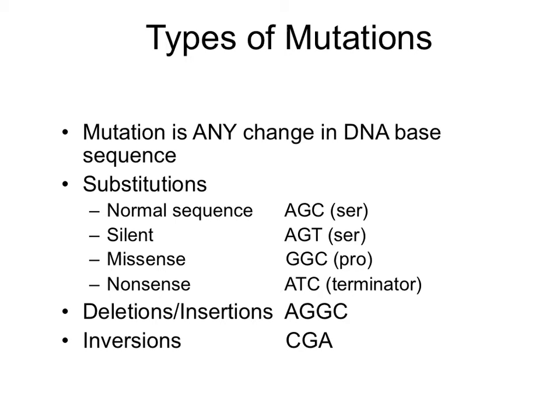There are different types of mutation — any change in the DNA base sequence. If you have a normal sequence AGC encoding serine and the C is mutated into T, the codon changes but produces the same amino acid — this is a silent mutation. If you mutate A into G giving GGC, this encodes proline, which is a missense mutation — serine mutated into proline. If G mutates into T, it leads to a stop codon, called a nonsense mutation, because it terminates protein synthesis.